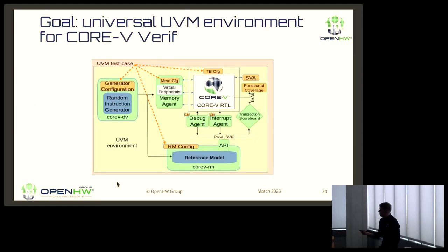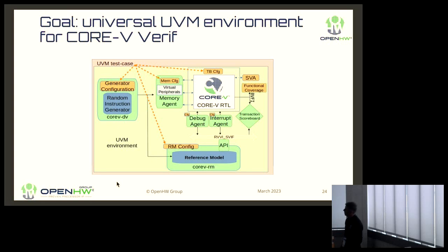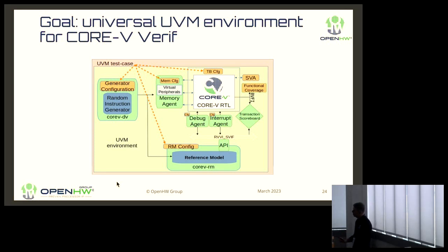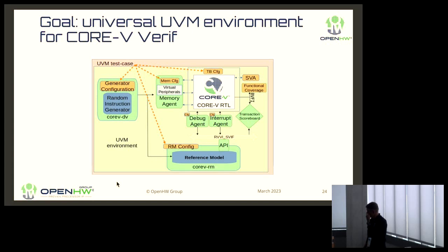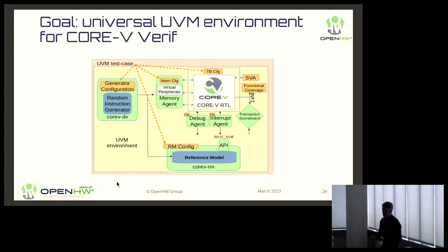Where we're headed is even more flexibility with UVM-based agents. There are things the Google random instruction generator can't do, so we're wrapping those up in a Core-V DV wrapper. There are things some reference models can't do, so we have a Core-V RM reference model wrapper. And there's transaction scoreboarding for the step-and-compare capability on the DUT versus the model. This is probably our biggest and most active task group in terms of SystemVerilog verification engineers contributing from around the world.